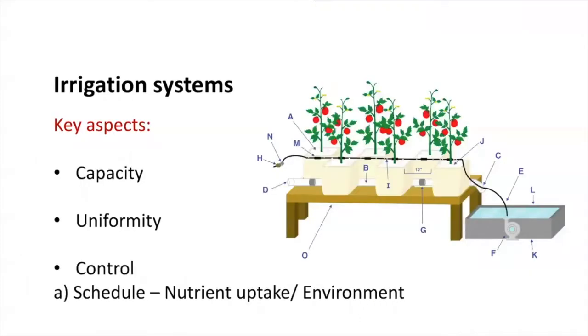So which are the key aspects to understand irrigation at a basic level? Let's speak about capacity, uniformity, and control.